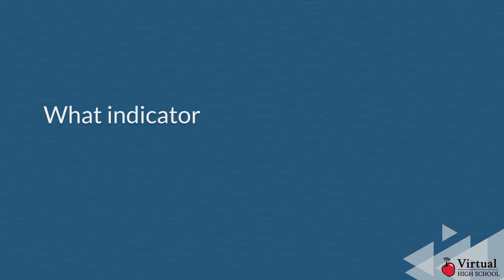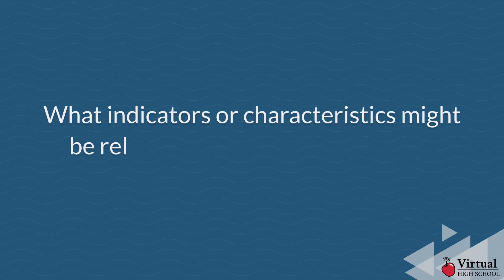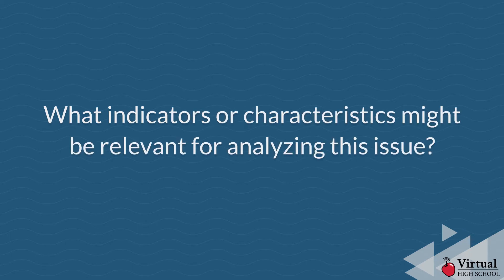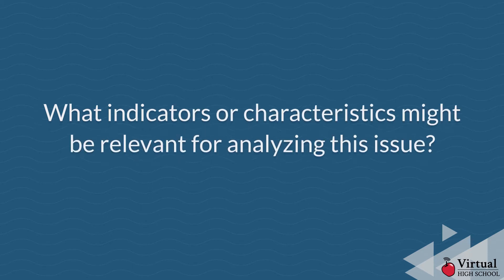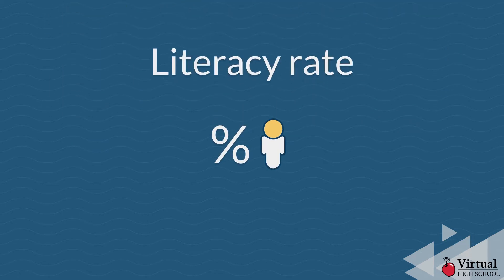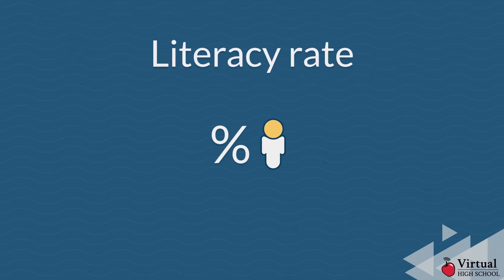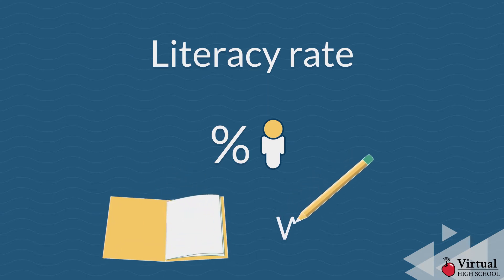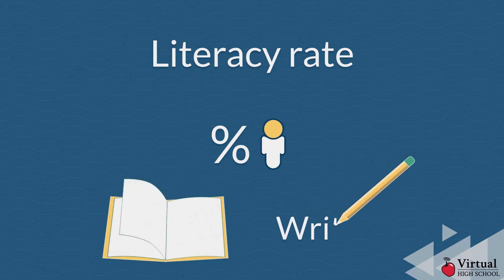What indicators or characteristics might be relevant for analyzing this issue? A statistical indicator that can be used to examine this issue is the literacy rate. It reveals the percentage of people in a country who can read and write.